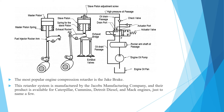This retarder system is manufactured by Jacobs Manufacturing Company, and their product is available for Caterpillar, Cummins, Detroit Diesel, and Mack engines, to name a few. As we see in the picture, there is the camshaft, the fuel injector rocker arm, the piston, and this is the exhaust valve.